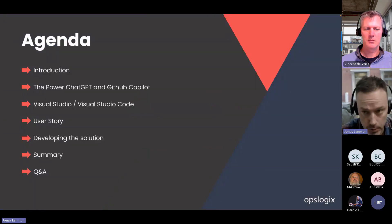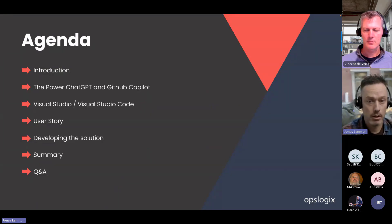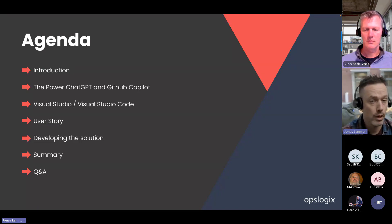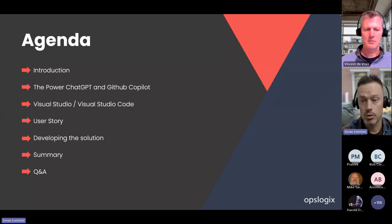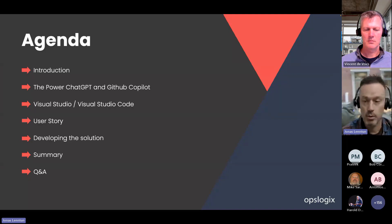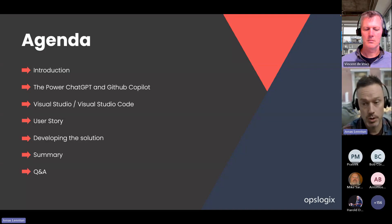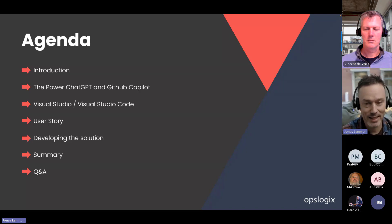So this is the agenda today — just a brief introduction. We're going to talk about the benefits of ChatGPT and GitHub Copilot. Vincent is going to show you how to get started both in Visual Studio Code and Visual Studio. After that we'll have a quick user story where we try to, from the beginning when we get a request, show how we can benefit from the tools to actually develop the solution. Then a quick summary about our experience with this exercise, and then we'll finish off with Q&A.